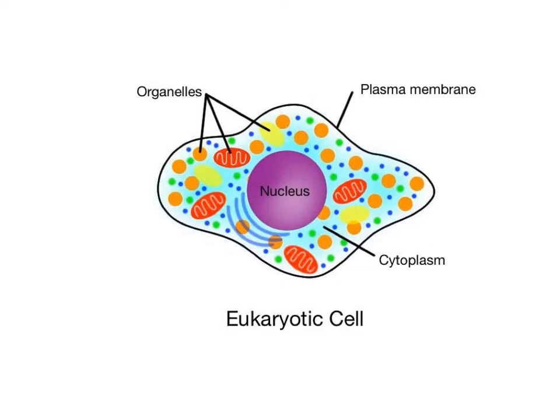This is a diagram of a general animal cell found in the human body. It represents a generic human cell, not a specialized cell type like a muscle cell or a bone cell.